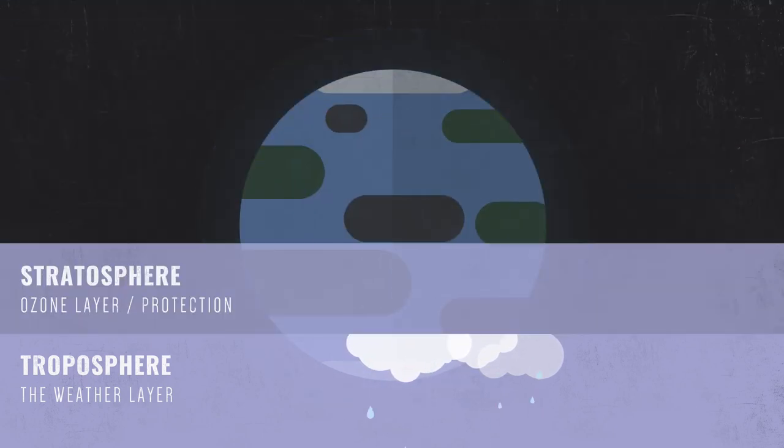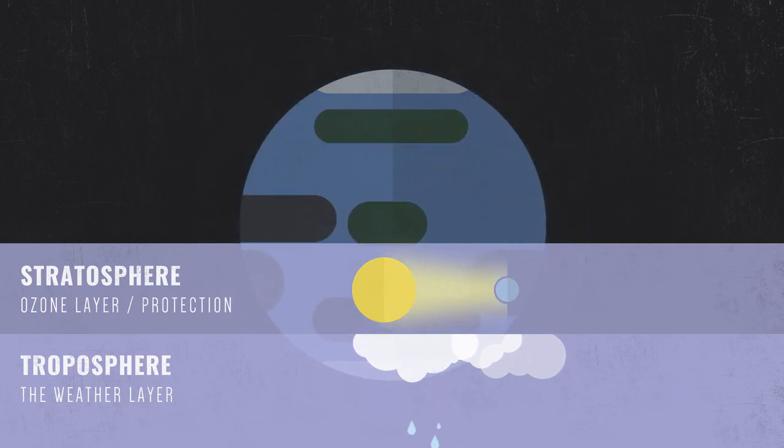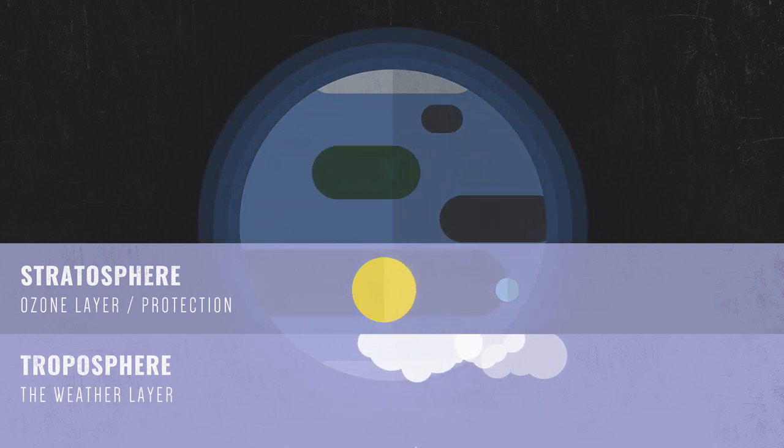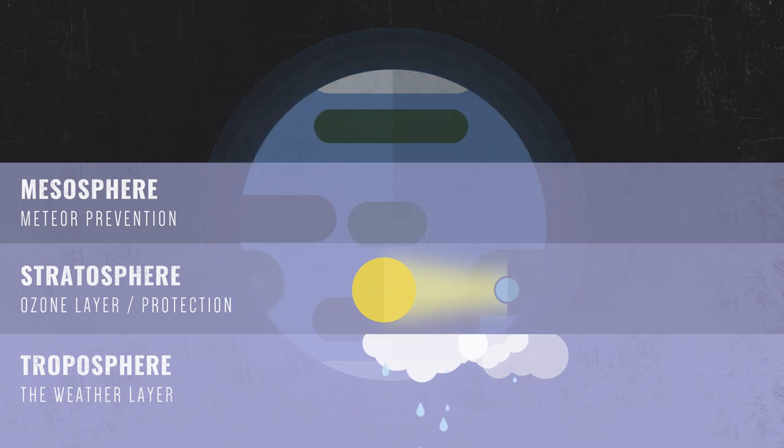The stratosphere holds our ozone layer, protecting us from deadly rays from the sun's light. The mesosphere stops meteors from making it to Earth's surface, keeping us safe and sound.